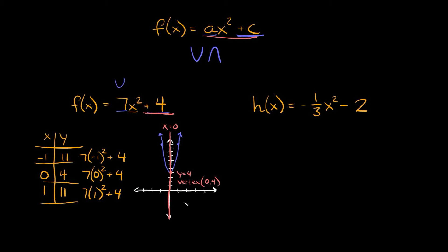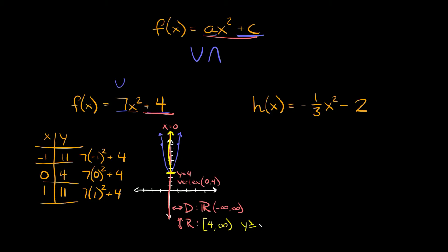The domain is your x-value limits. For all these parabolas it's always going to be all real numbers — you can write it as negative infinity to positive infinity. For the range, those are your vertical limits. The lowest point on this parabola is at y equals 4, so the range goes from positive 4 to positive infinity, or y is greater than or equal to 4.